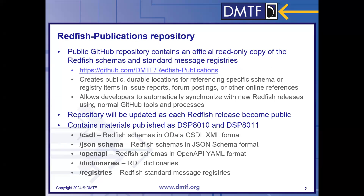All that material is available from the Redfish Developer Hub. One thing to call attention to — something we added about a year ago — is a GitHub repo that is public called Redfish Publications. This repository contains copies of the message registries and the schemas, and recently we added the mockups. Those are all organized, effectively exploding out the contents of DSP-8010 and DSP-8011 to provide a GitHub mechanism for you to keep up to date. So if you just clone the Redfish Publications repo, you can keep that in sync with the latest Redfish releases.